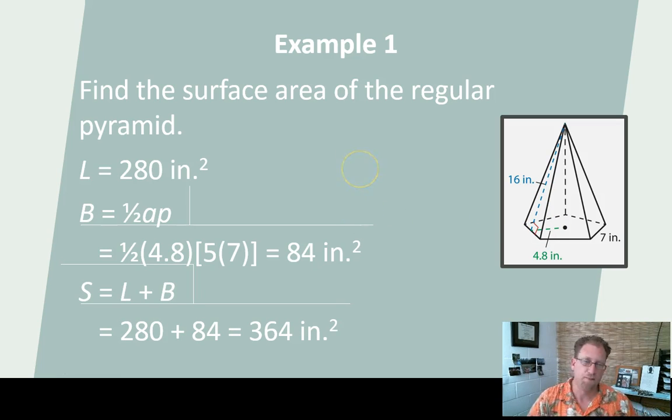So 1/2 times 4.8 times 35 equals 84 square inches. So 84 on the bottom, 280 on the sides. Add them together and you get 364 square inches. Is that the same answer you got? If not, it's okay. No sweat. We'll do a bunch of them together in class. Let's move along.